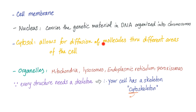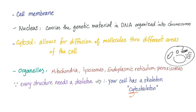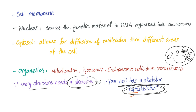Cytosol allows for diffusion of molecules through different areas of the cell. Organelles include the mitochondria, the lysosome, the endoplasmic reticulum, and the famous Golgi apparatus. Every structure needs a skeleton, and your cell is no exception — it needs a skeleton called the cytoskeleton, because cyto means cell.